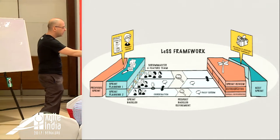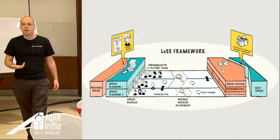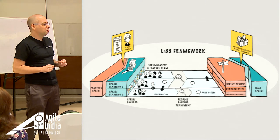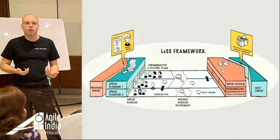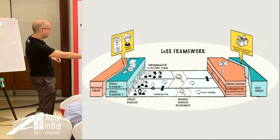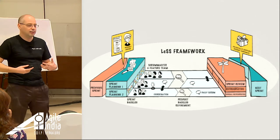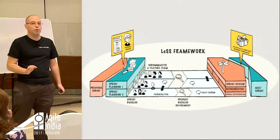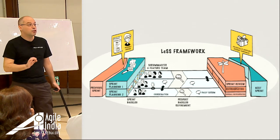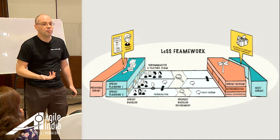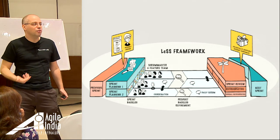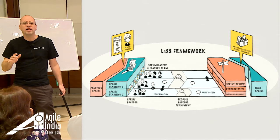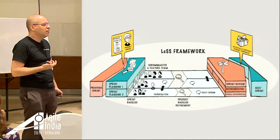LeSS — Large-Scale Scrum — has many different perspectives, and this is the most popular and least interesting one: the framework or flow picture. Within LeSS, just like in Scrum, there is always one product owner. This often comes as a surprise to people coming from Scrum, but if you build one product, you have one product owner. The diluting of the product owner role into a business analyst role is unfortunately common. So: one product owner for the entire product.